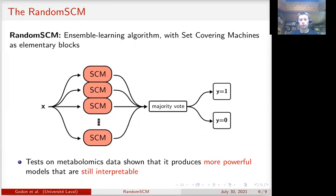Once the model is built, its prediction is the majority prediction among the set covering machines that compose it. We can reformulate it by saying that random SCM is built with SCMs as elementary blocks, the same way a random forest is built with decision trees.